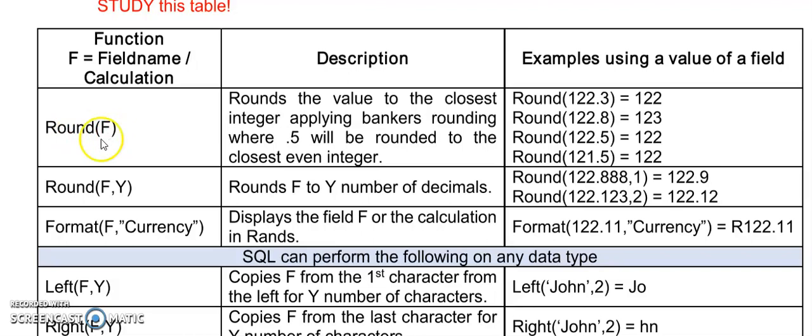Round will just do normal bankers rounding like we've done in grade 10, and then Round with a field name or calculation, comma, and then a number will round the number off to a certain number of decimal places. Y will represent your decimal places.